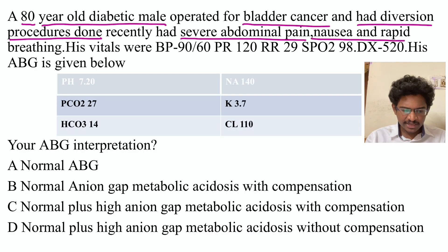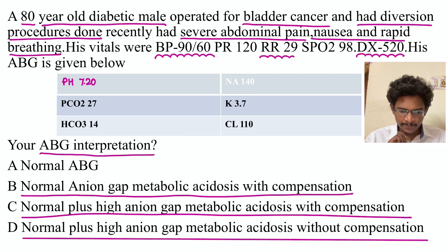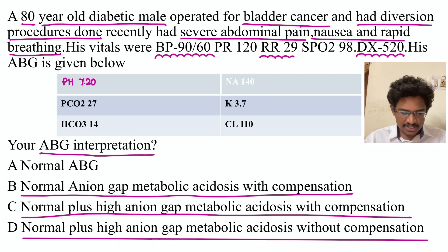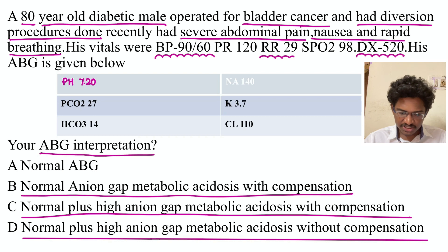An 8-year-old diabetic male, operated for bladder cancer with diversion procedures done recently, presents with severe abdominal pain, nausea, and rapid breathing. Vitals: BP 90/60, respiratory rate 29, SpO2 98%, dextrose 520. ABG: pH 7.2, PCO2 27, bicarb 14. Options: normal anion gap metabolic acidosis (NAGMA) with compensation; HAGMA plus NAGMA with compensation; HAGMA plus NAGMA without compensation.